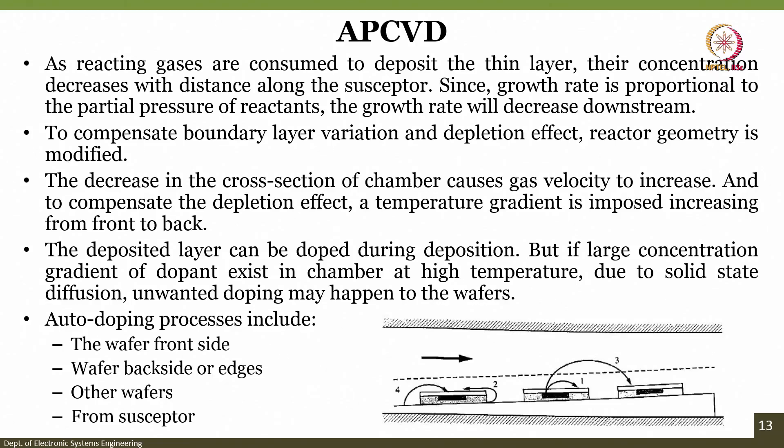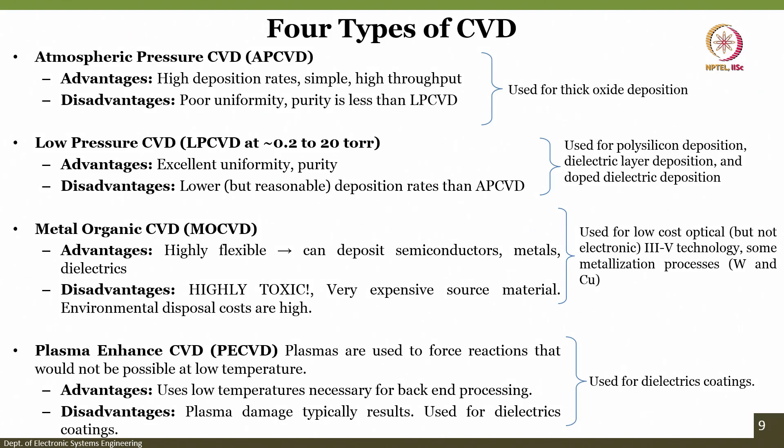We have seen APCVD. All CVD types have their own advantages and disadvantages. APCVD has a high deposition rate and is a very simple technique to grow silicon dioxide or insulating materials — the difficulty is only poor uniformity and purity. Let us see the other CVD types in the next class to get a full understanding of what CVDs are and how they can be utilized. See you in the next class, bye for now.